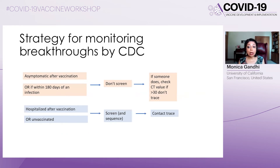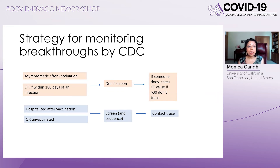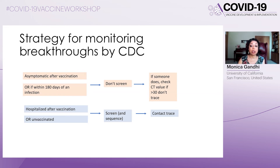This is the CDC's recommended strategy for monitoring breakthroughs. Don't screen asymptomatic individuals or those within 100 days of an infection, because you can still have dead virus in the nose. Instead, screen and sequence people who are sick and have symptoms of COVID-19 after vaccination, and at that point measure the cycle threshold of the PCR to determine if they can transmit.